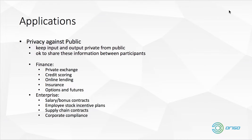For applications, there could be two kinds. We divide the privacy requirements into two types. One is privacy against the public. It's more like it's usually not a really big problem if you don't store stuff on the blockchain. But when using the blockchain, it becomes a problem because currently all of the data stored on blockchain is public.